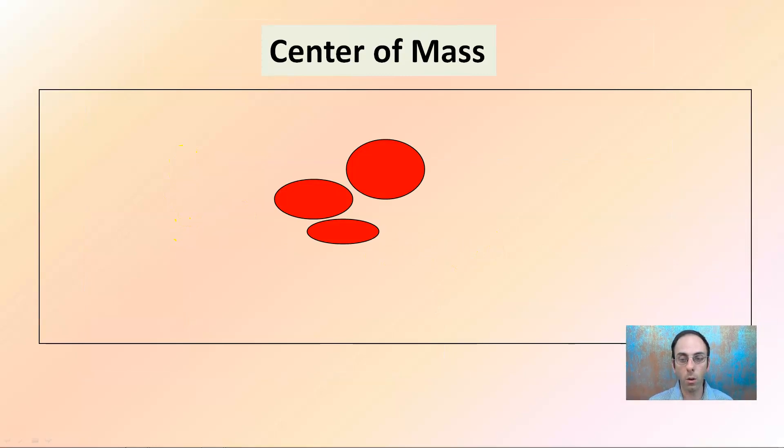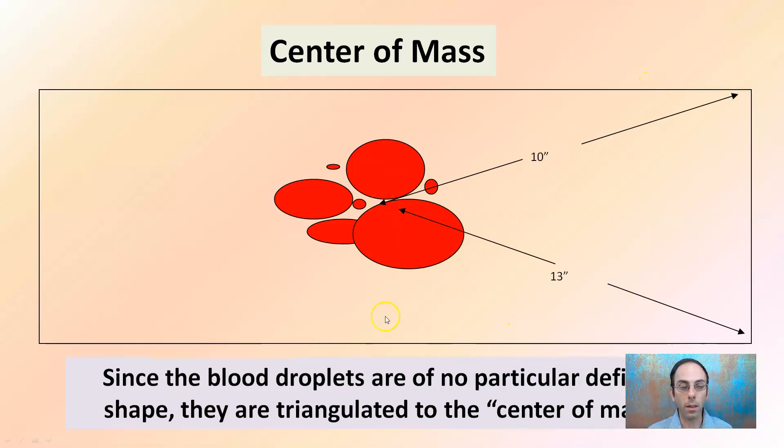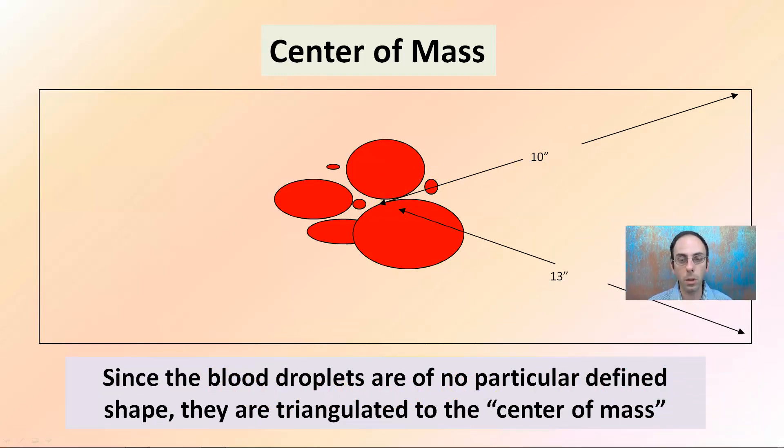Center of mass. So what does this refer to? A lot of times we're dealing with blood splatter or some other forms of liquids. How are we dealing with that? Or how are we going to measure those? We can measure each of those in this case. We're going to measure to what's called the center of mass. Since blood droplets are no particularly defined shape, they are trained from the center of mass.